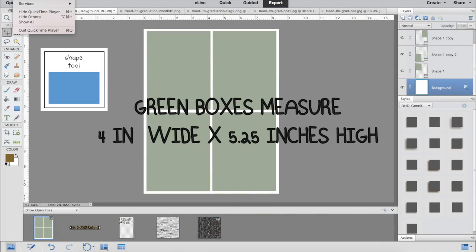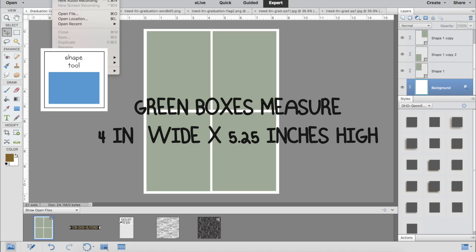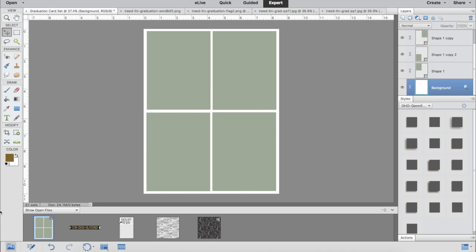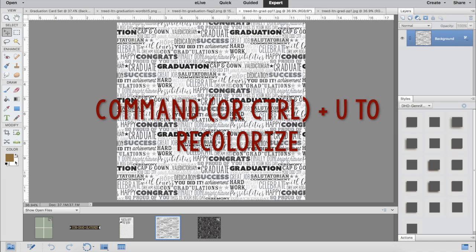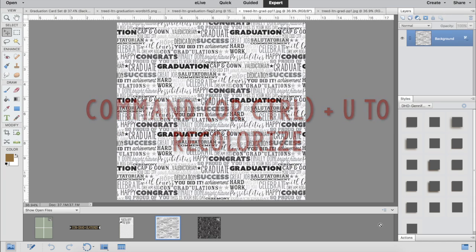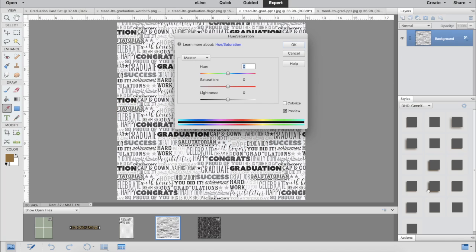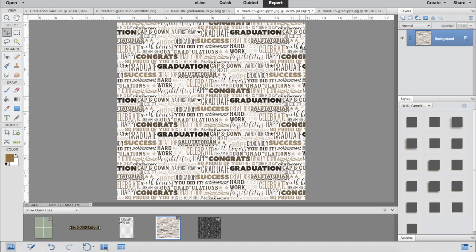Using the shape tool, I created these four green boxes with the dimensions on the screen. Now I'm going to take one of the papers in the kit and recolorize it to brown by hitting Control U and choosing a color from the color picker to match my niece's school colors.